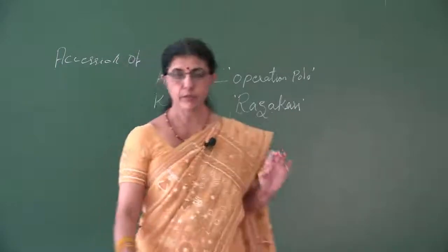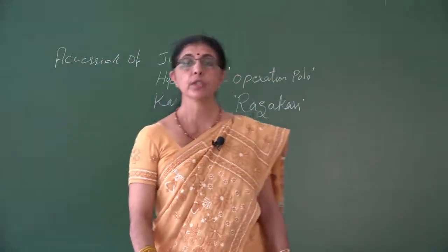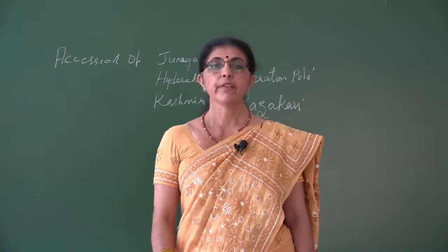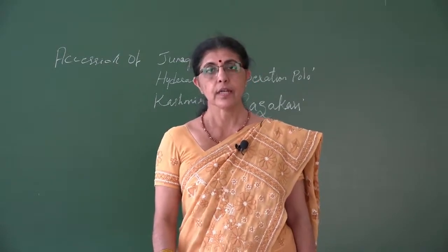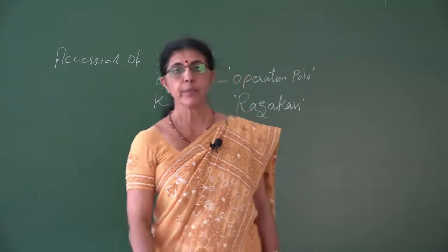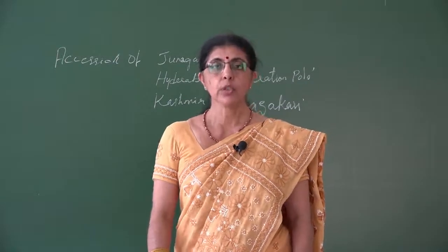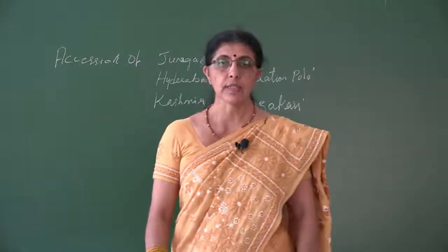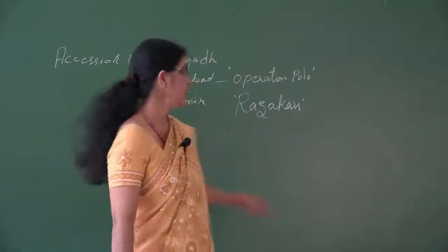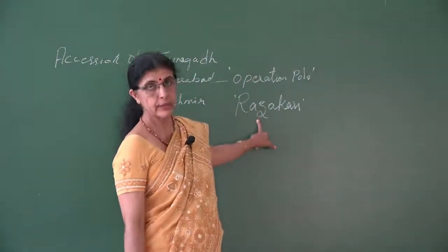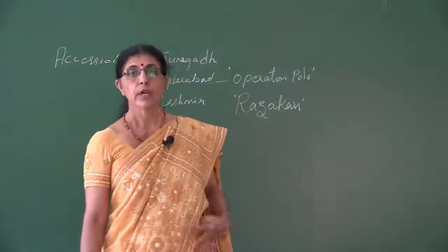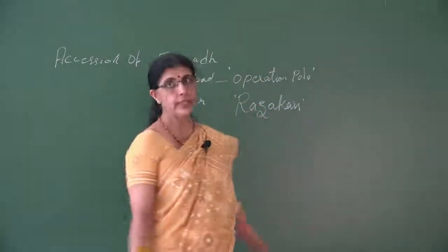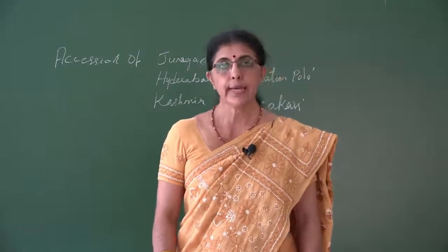The paramilitary force called the Razakars were very abusive toward the people — they harassed, raped, murdered, and looted the people, targeting all non-Muslims. To end this anarchy, the Indian army entered Hyderabad in 1948. This police action to stop the Razakars was called Operation Polo. Immediately after this, it was followed by the complete accession of Hyderabad into the Indian Union.